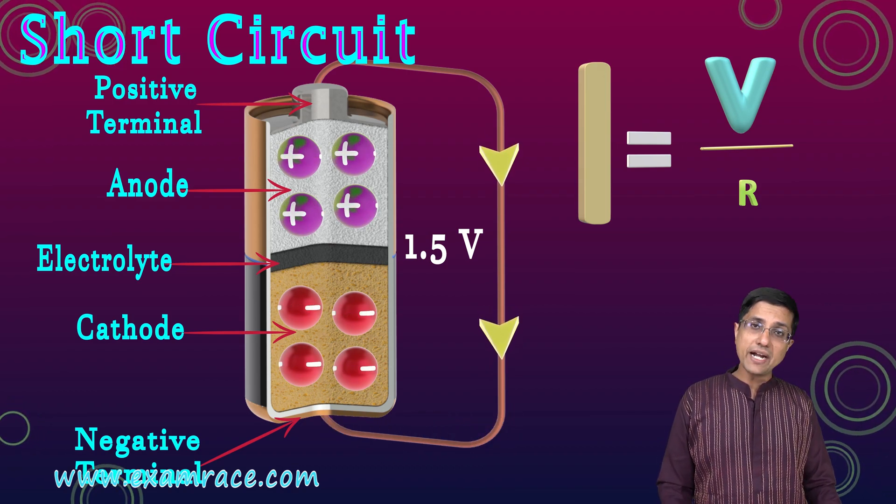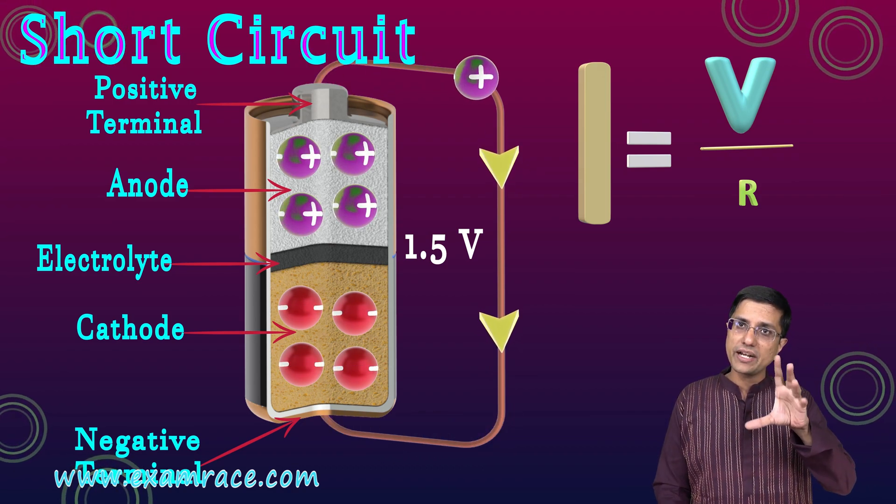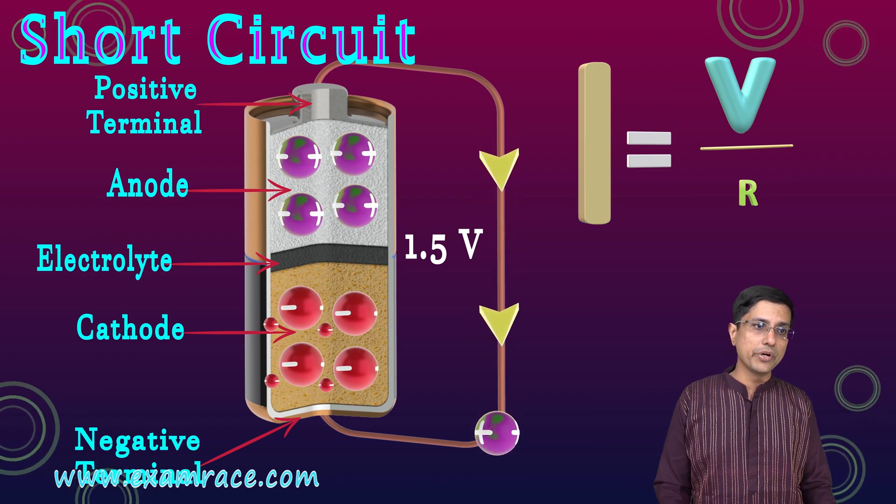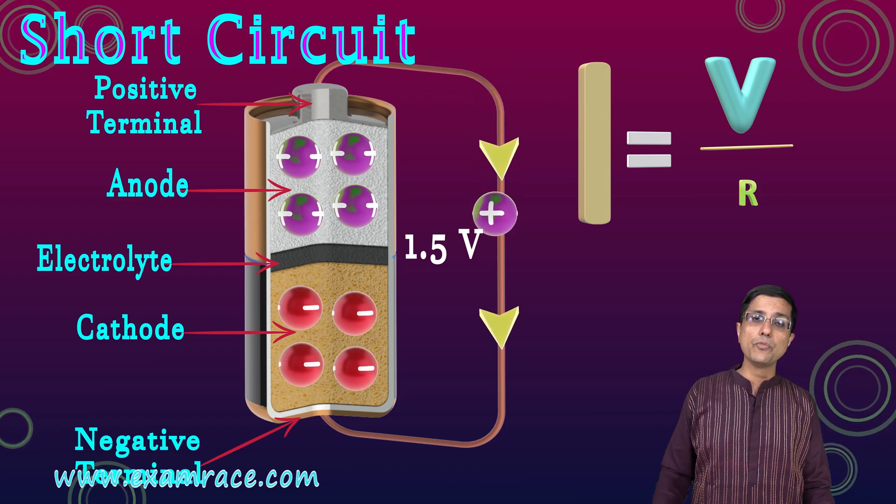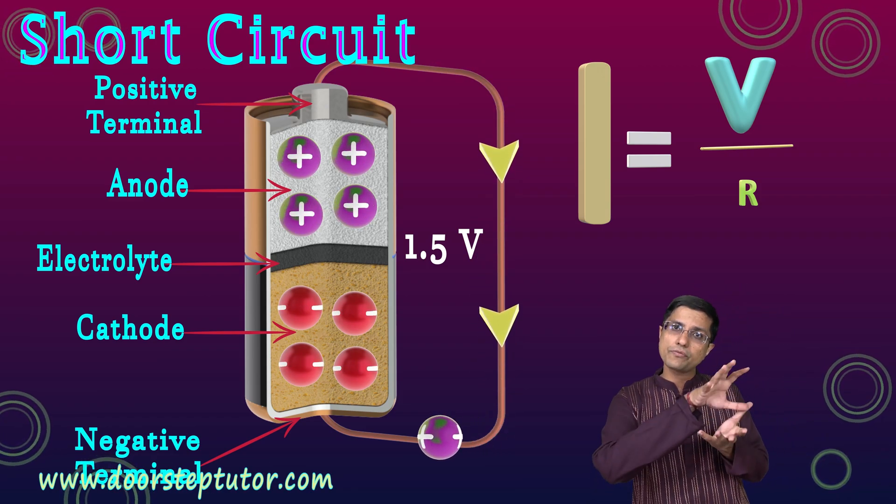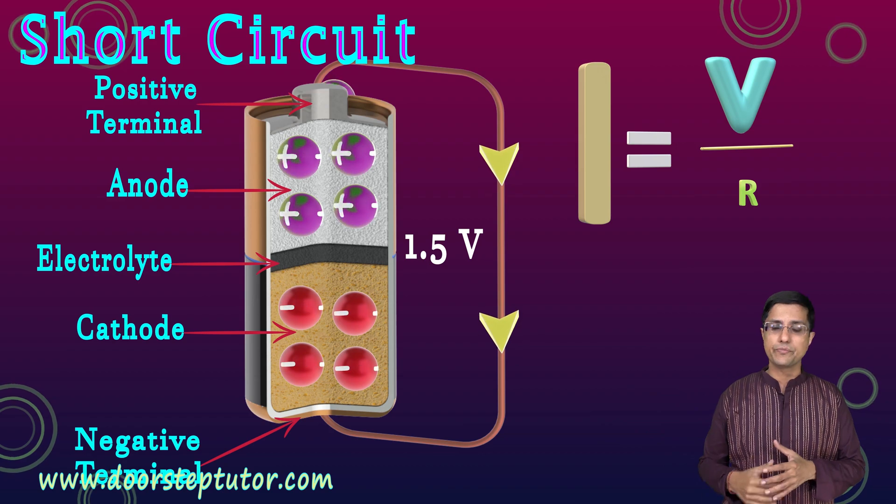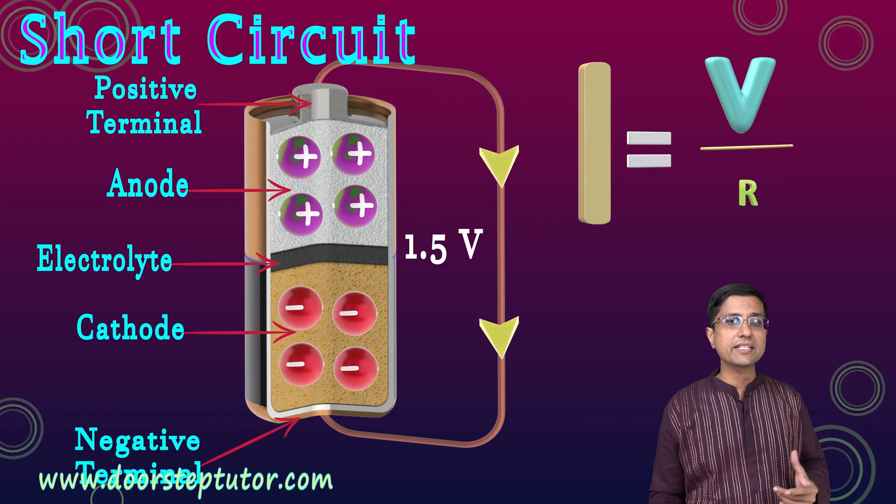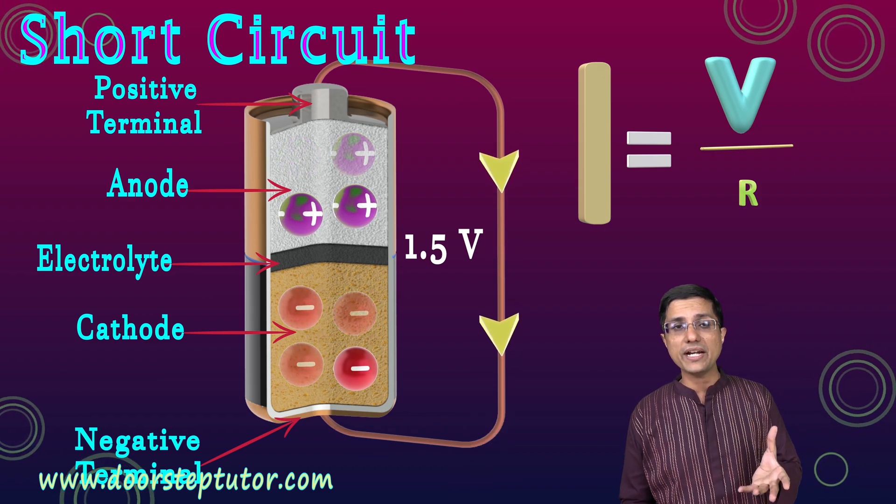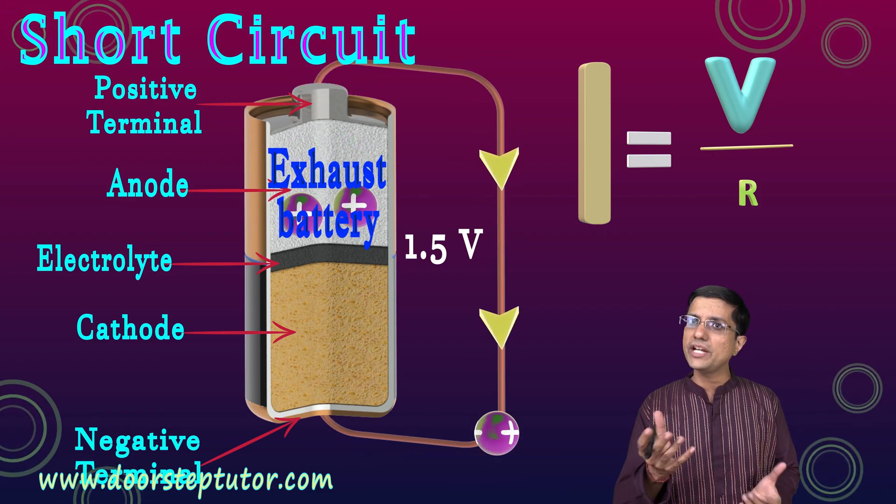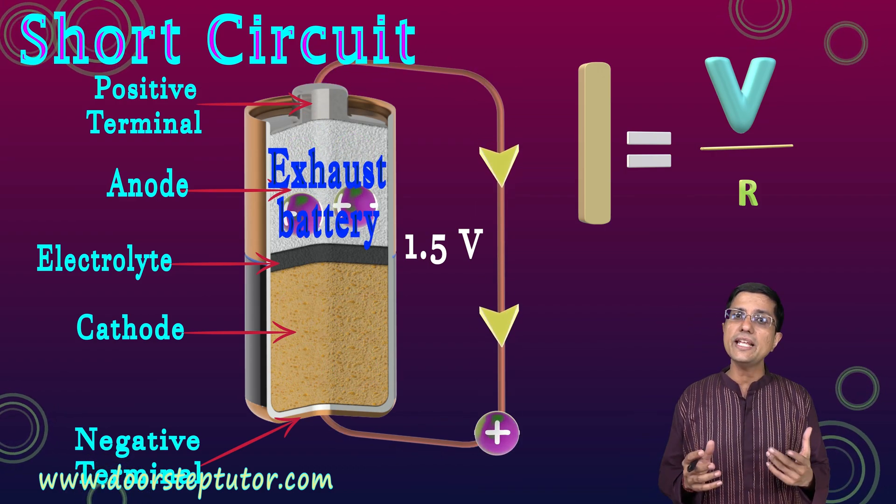Inside the battery there are chemical reactions going on which are producing these charges and doing the charge separation. Because we are moving a lot of charges, a lot of current through the external wire, the reactions inside the battery would also happen much faster and the battery would quickly exhaust. It will also heat up a little.